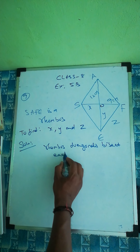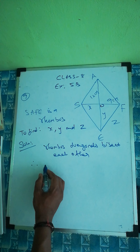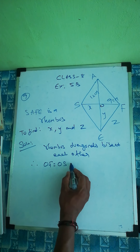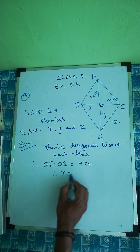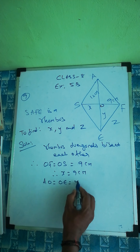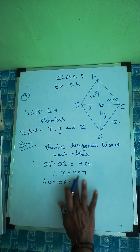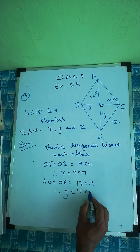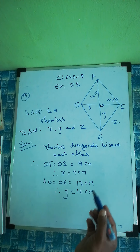Since diagonals bisect each other, OF equals OS equals 9 centimeters, therefore x equals 9. Similarly, AO equals OE equals 12 centimeters, therefore y equals 12. So we have x=9, y=12 on both halves of each diagonal.